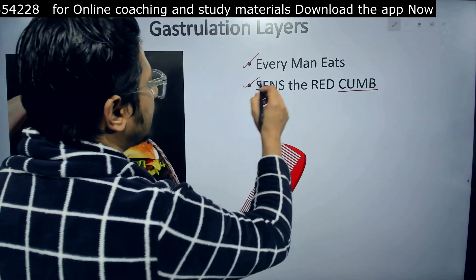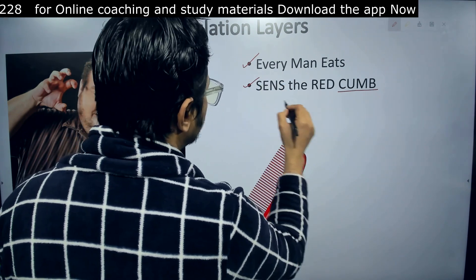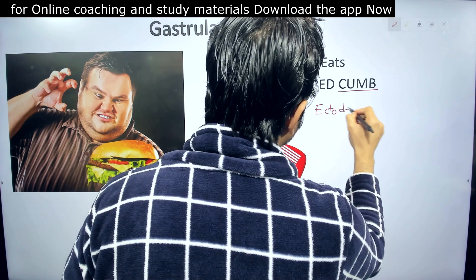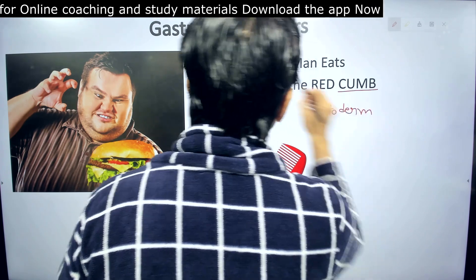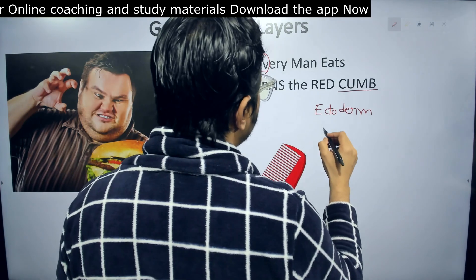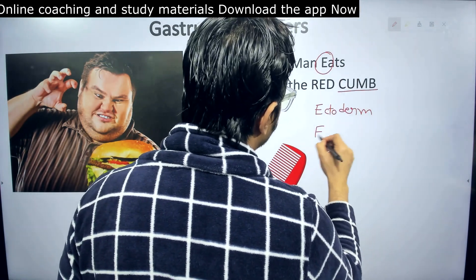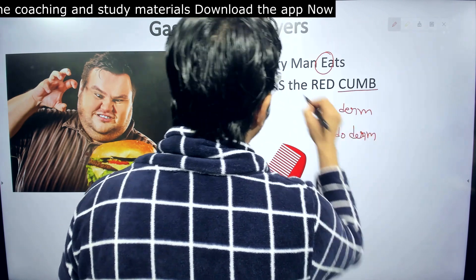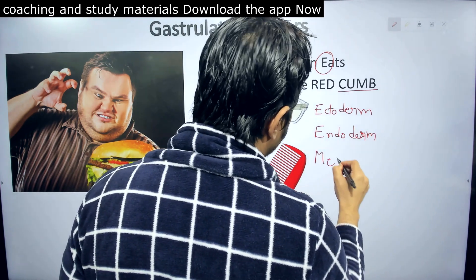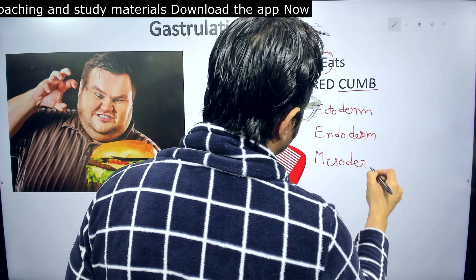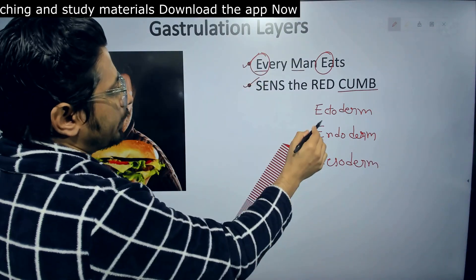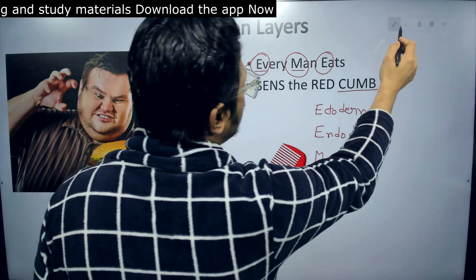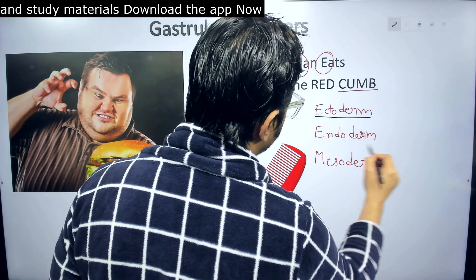Starting with the letter E — I'll write it down. E is for ectoderm. Then another E is for endoderm. And M is for mesoderm. So we have: first E for ectoderm, second E for endoderm, and M for mesoderm — ectoderm, endoderm, mesoderm.